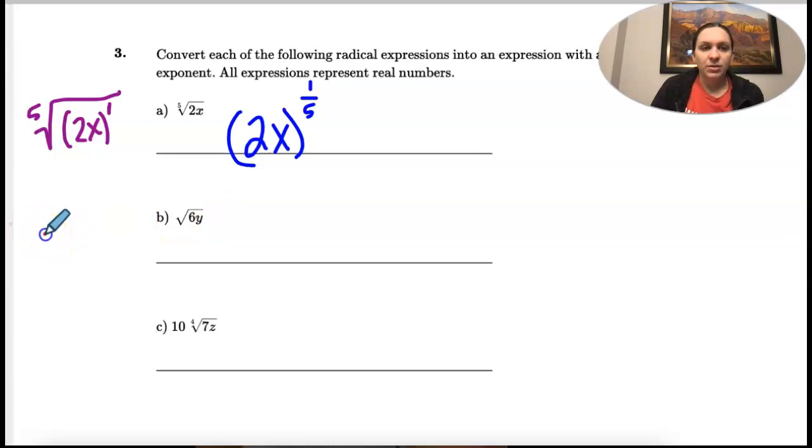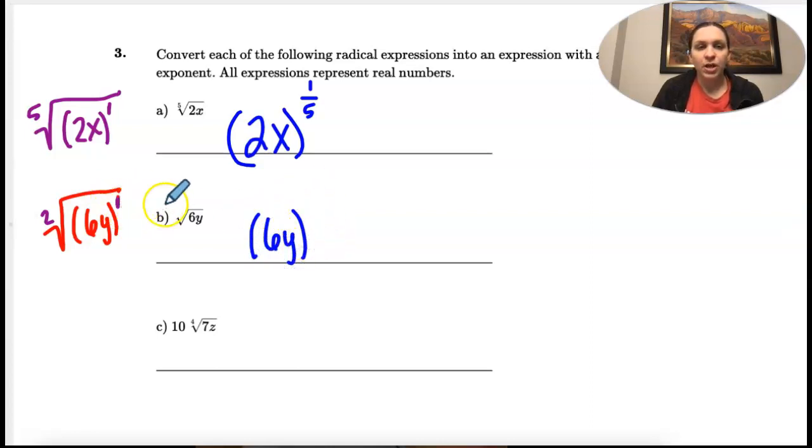So same thing on this one. The 6 and the y stay together, and those are both to the first power. We have that invisible one, and then remember when there's no index, it's 2. So we're going to take 6y, and then numerator, denominator, 1 half.